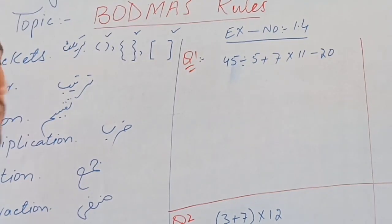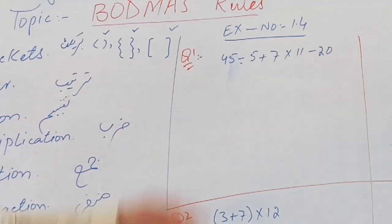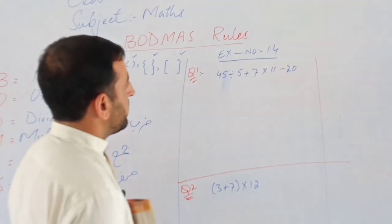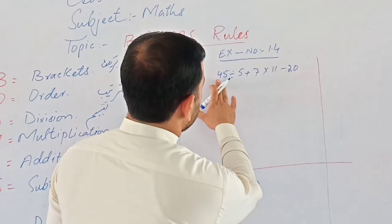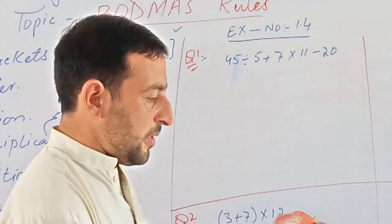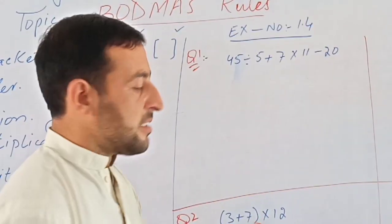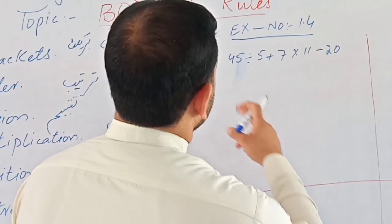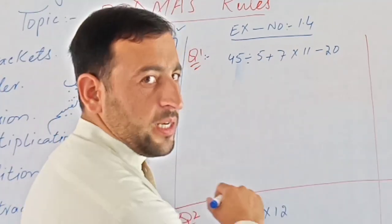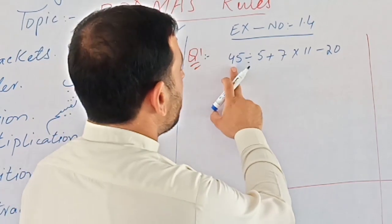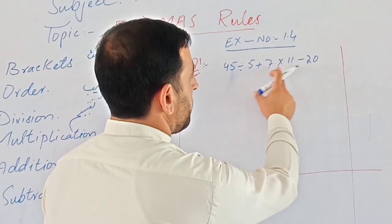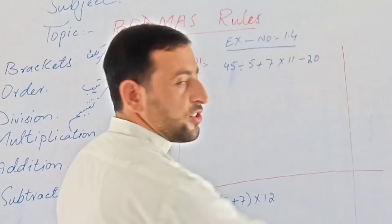Let's work through a question together. We will solve a question and apply the rules. In the book on page number 23, in exercise 1.4, there is question number 1. The question is: 45 divided by 5, plus 7 multiplied by 11, minus 20.